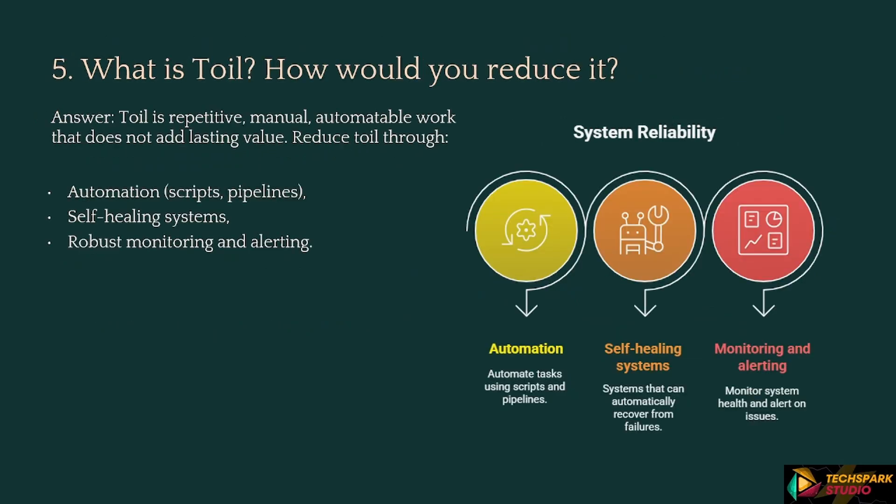Moving further: What is toil and how do you reduce it? Response: Toil is repetitive, manual, automatable work that does not add lasting value. Reduce toil through automation, scripts, pipelines, self-healing systems, and robust monitoring and alerting.